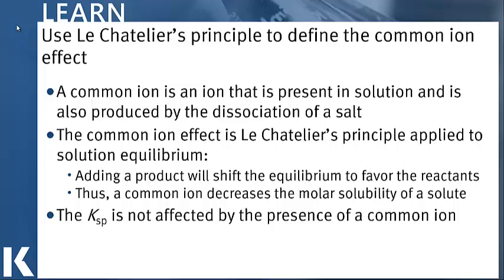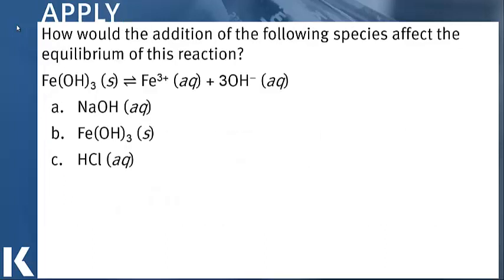Let's look at a question based upon this. How would the addition of the following species affect the equilibrium of this reaction? So first we see that iron 3 hydroxide is put into a solution, and we make iron 3 ions as well as hydroxide ions.